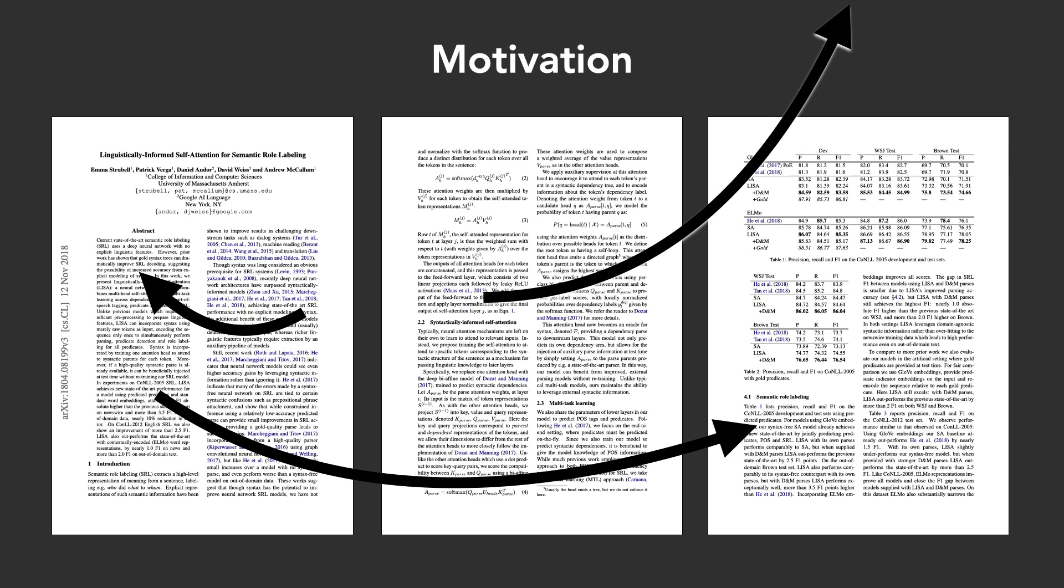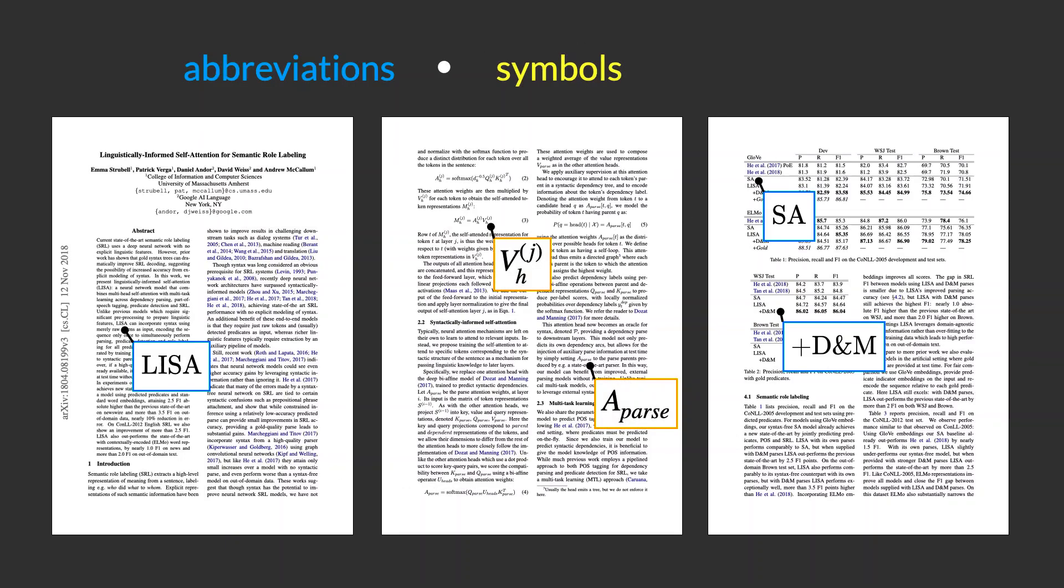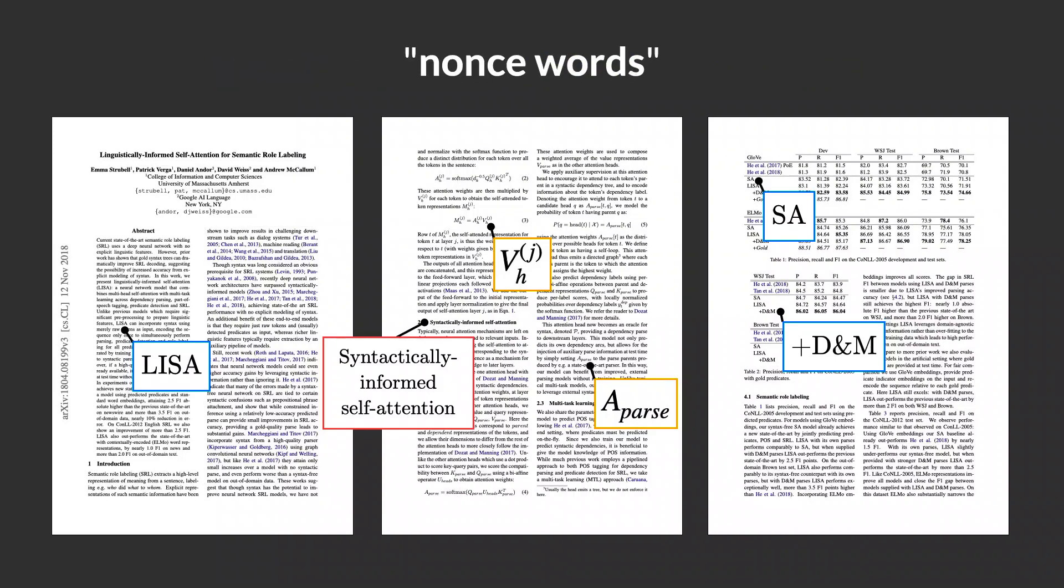One problem is the abundance of abbreviations, mathematical symbols, and new terms defined within a paper for use only within that paper. These are called nonce words. Unlike standard scientific terminology which an expert in the field is expected to learn and memorize,